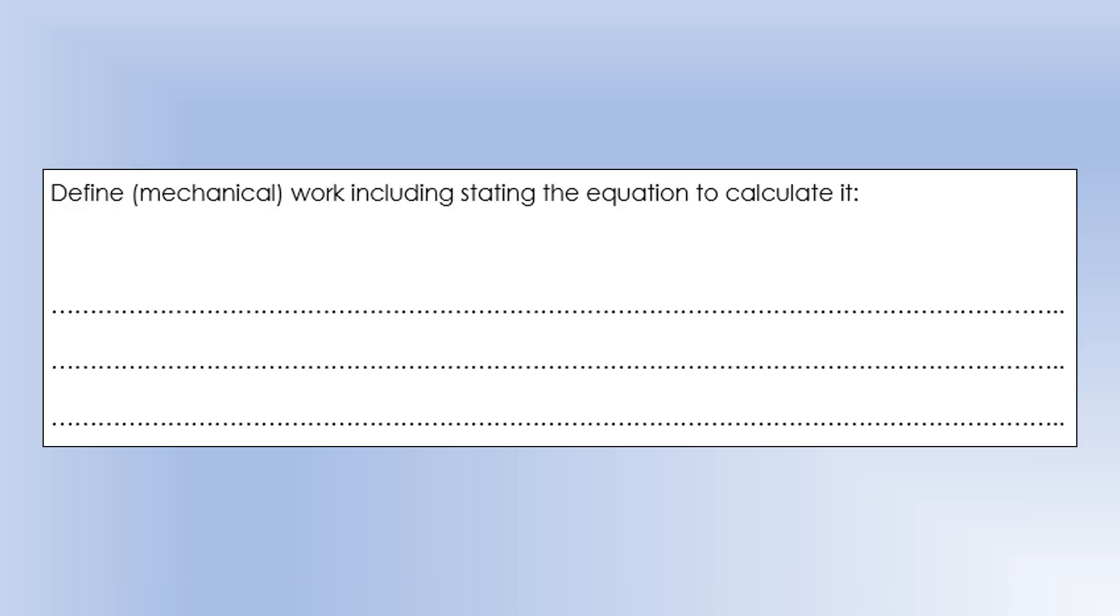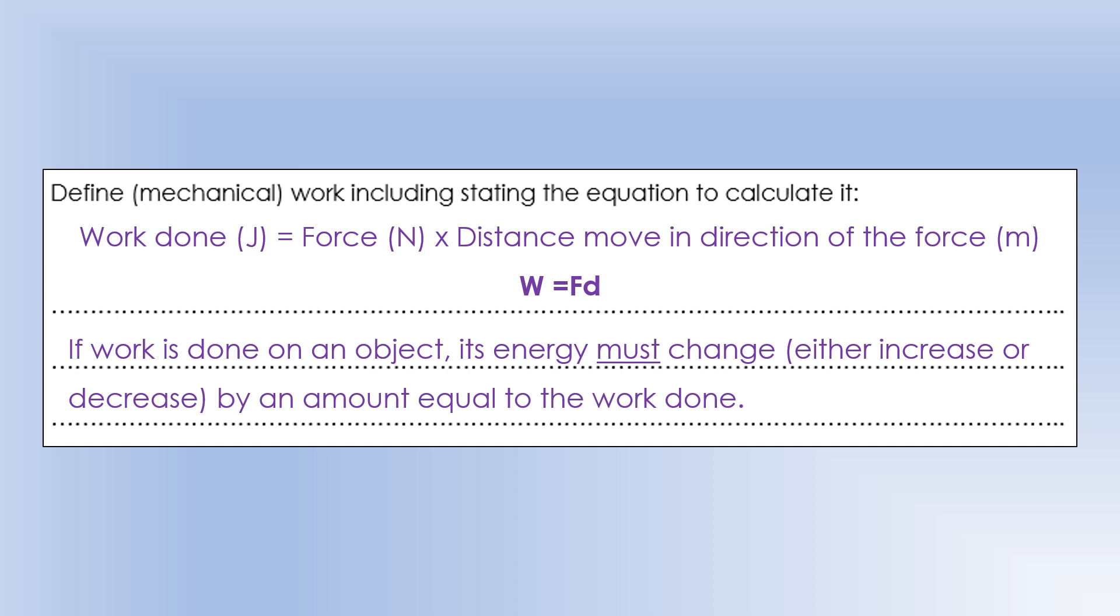Define mechanical work. You often see it just called work, but we're talking about mechanical work here. Work done is force measuring in newtons times distance moved in the direction of the force, measured in metres. That's often simplified to W equals Fd. If work is done on an object, its energy must change. It can either increase or decrease, but if we do work, its energy must change, and it must change by amount equal to that work done. That's what conservation of energy tells us.